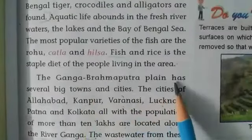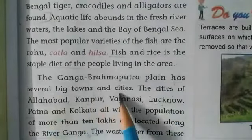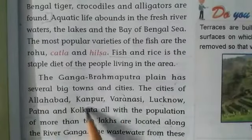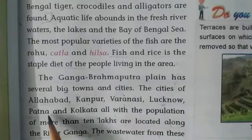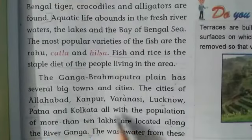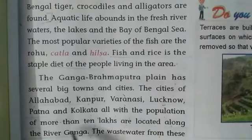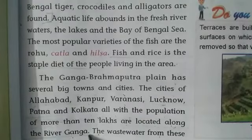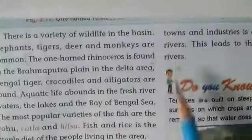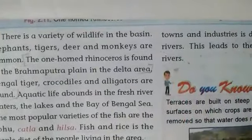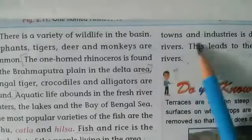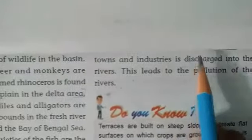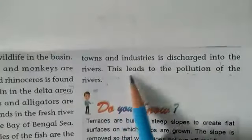The Ganga-Brahmaputra plains have several big towns and cities like Allahabad, Kanpur, Varanasi, Lucknow, Patna, and Kolkata — all with a population of more than 10 lakhs — located along river Ganga. The wastewater of these towns and industries is discharged directly into the rivers.